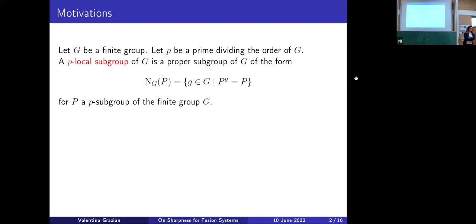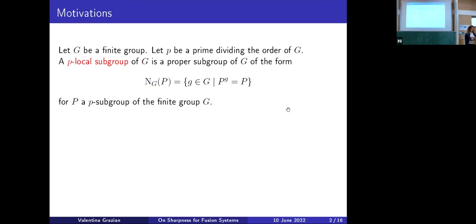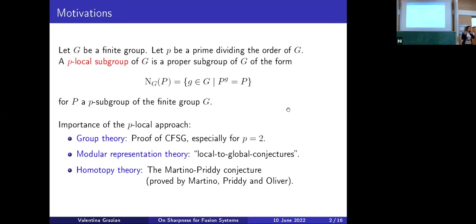So let's start from some motivation. The point of working with fusion systems and then sharpness is to be able to study the p-local structure of a finite group. Given a finite group G, a p-local subgroup of G is any subgroup of the form normalizer_G of P, where P is any p-subgroup. To study the p-local structure of G means to study the structure of the subgroups of G of this form. It turns out that if you can gain enough information on the p-local subgroups, then you can deduce properties of the full group G.